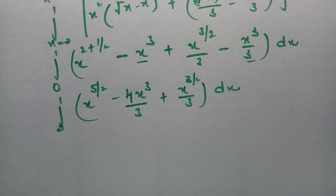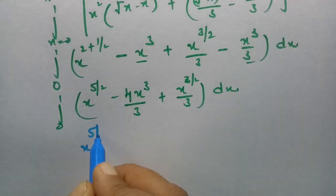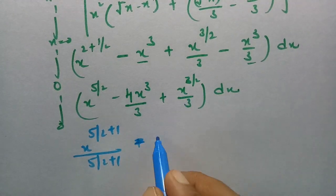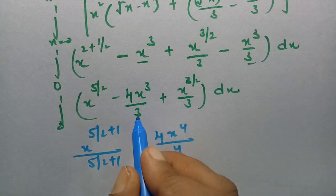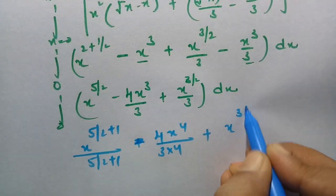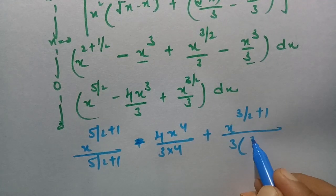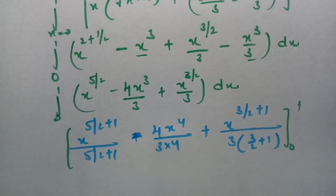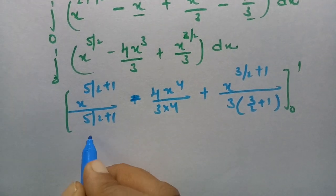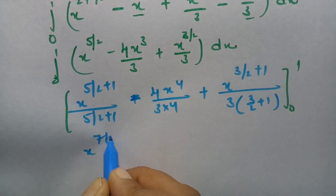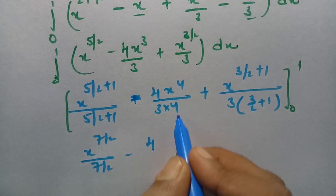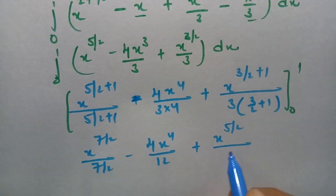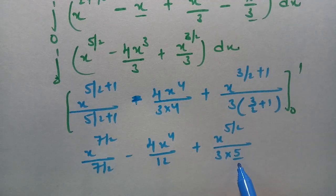Now I have to integrate with respect to x. For the term x to the power 5 by 2, integrating gives x to the power 5 by 2 plus 1, which is x to the power 7 by 2, divided by 7 by 2. For the x cube term, we get minus 4 x to the power 4 by 4, and the 3 is already in the denominator. For x to the power 3 by 2, integrating gives x to the power 5 by 2, divided by 3 into 5 by 2. All evaluated between the limits 0 to 1.